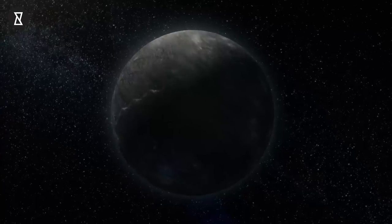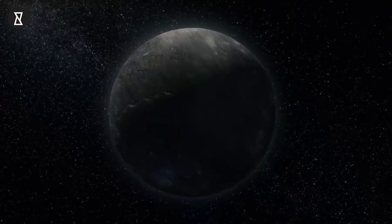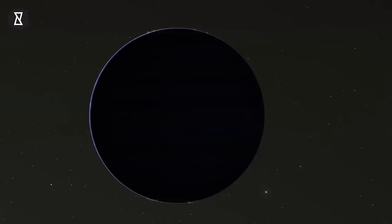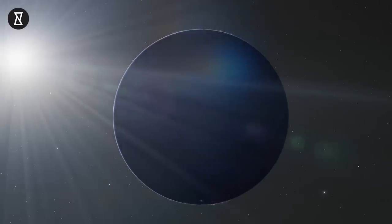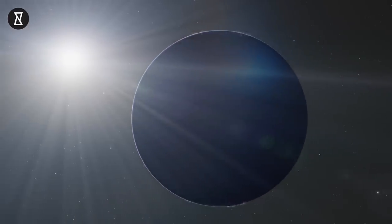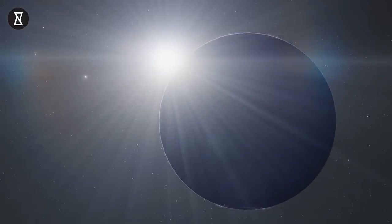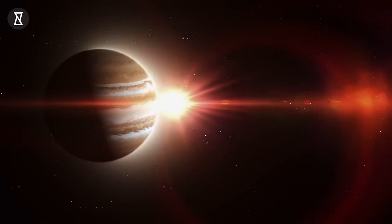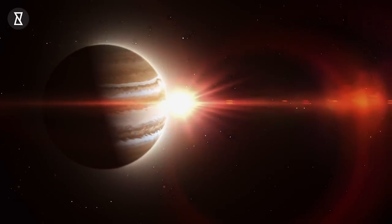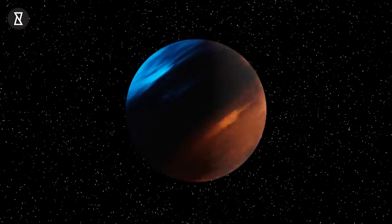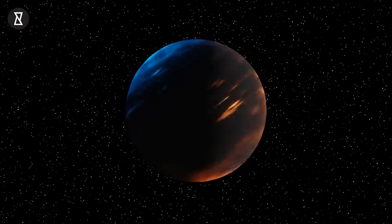The planet is unusual in several ways, all of which act to make it a particularly easy target for direct imaging. First, it is a long way from its host star, orbiting roughly 92 times farther than the distance between Earth and the Sun. That puts it around 14 billion kilometers from its star. From our point of view, this makes for a reasonable distance from the star in the sky, making it easier to observe.